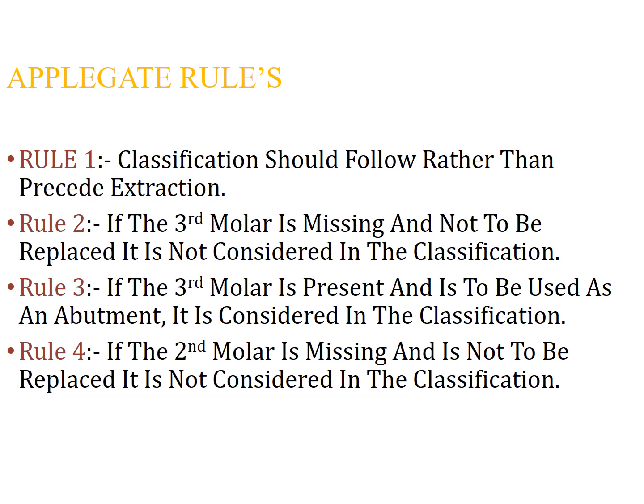If a third molar is present and you want to use it as an abutment, then you consider it in the classification. In that case, if you have a third molar present in a Kennedy's Class 1 situation, you cannot call it Class 1 — it will become a Kennedy's Class 3. Rule number 4: if a second molar is missing and not to be replaced, you do not consider it in the classification.